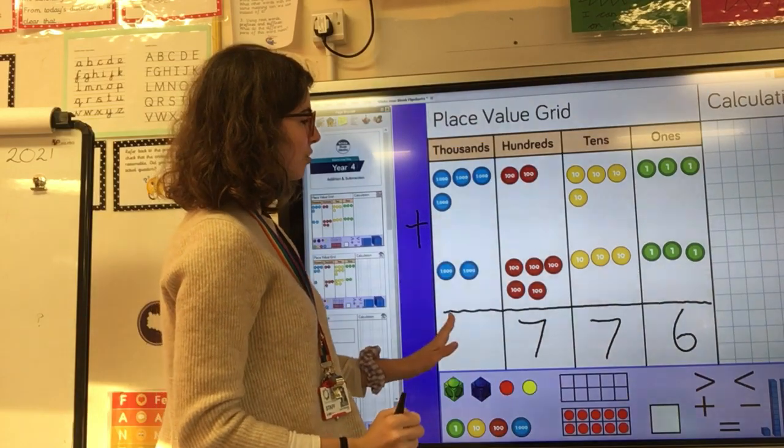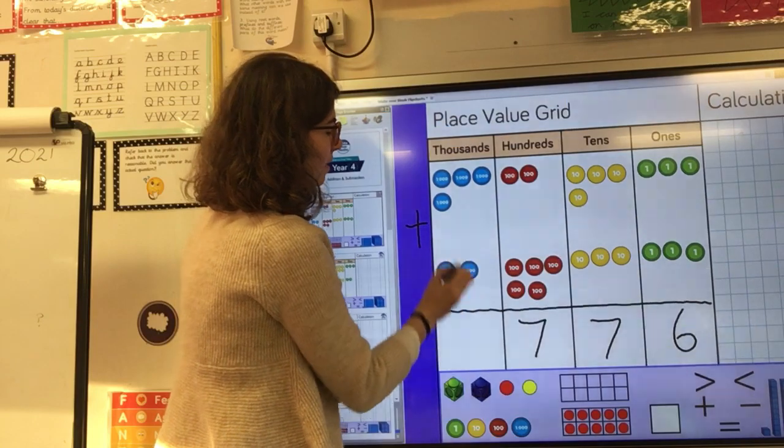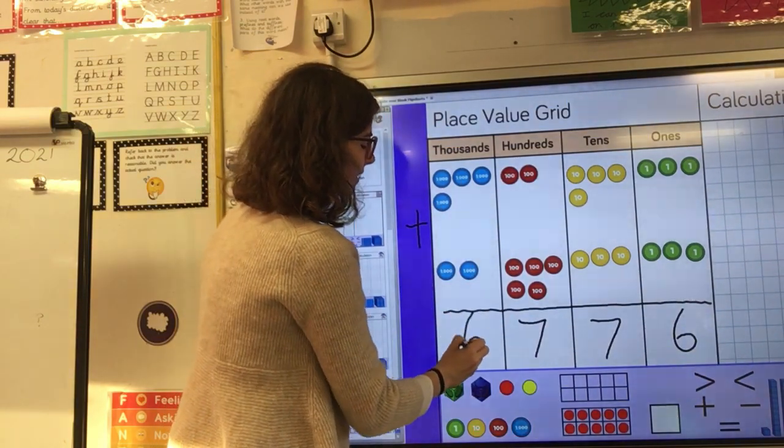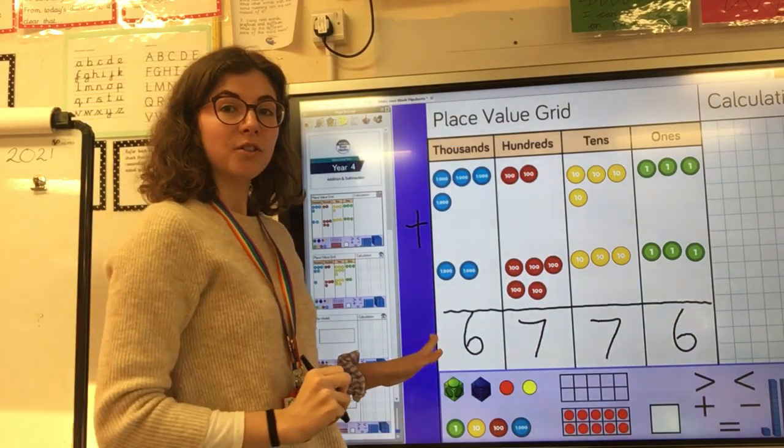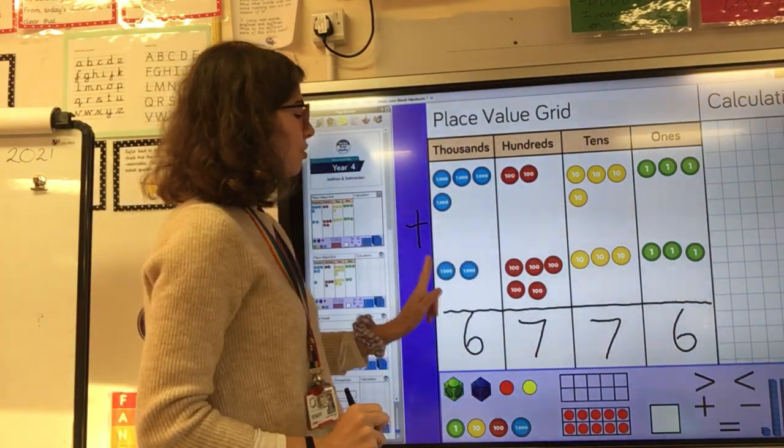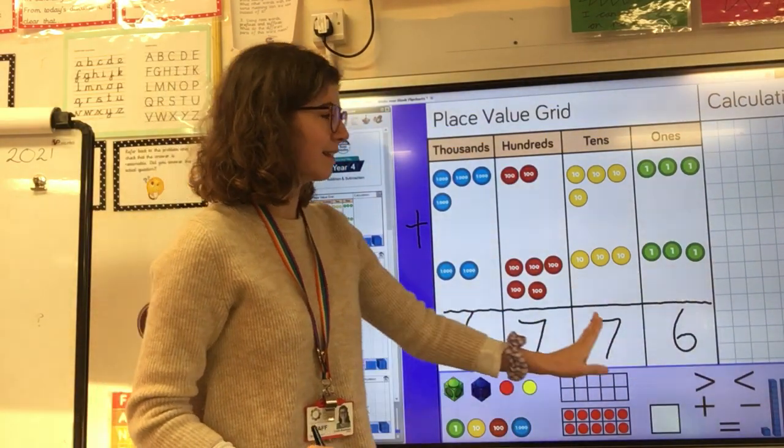And then in my thousands column I have got four thousands plus two thousands. If I count them all together that will give me a total of six thousand. So my total in this case for 4,243 add 2,533 was 6,776.